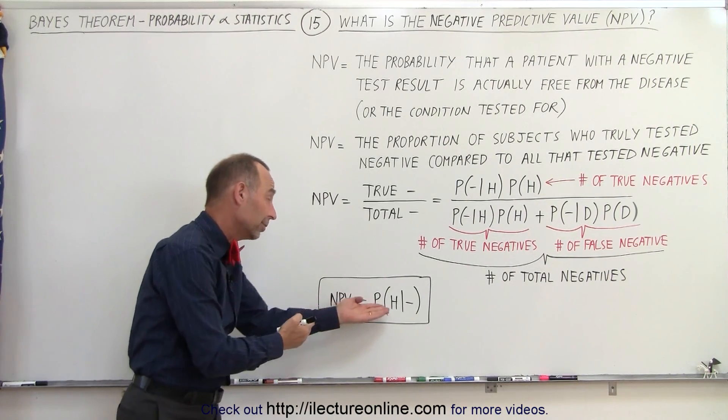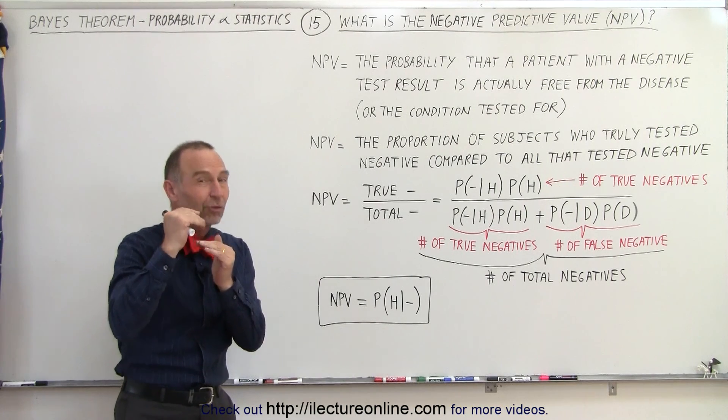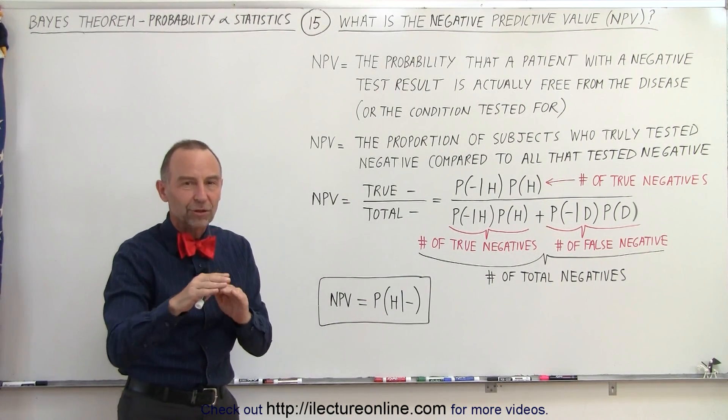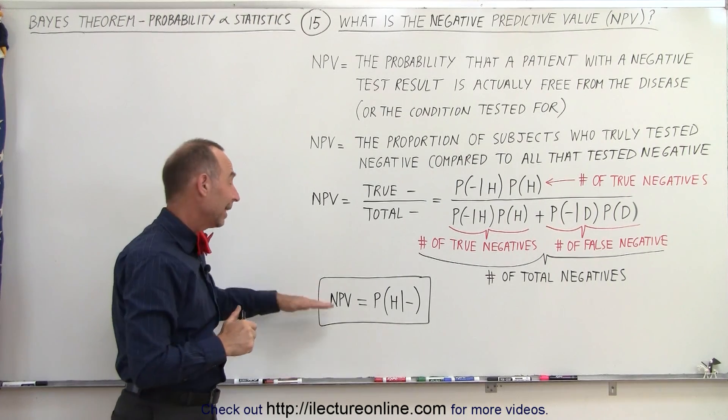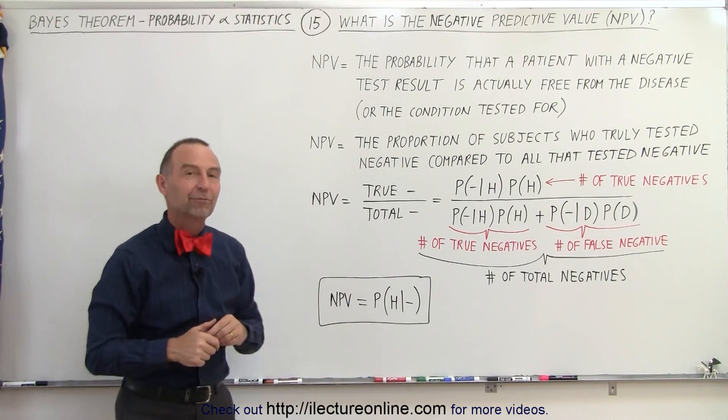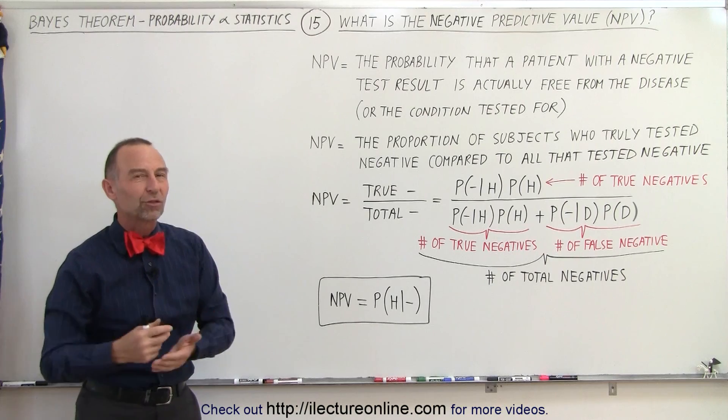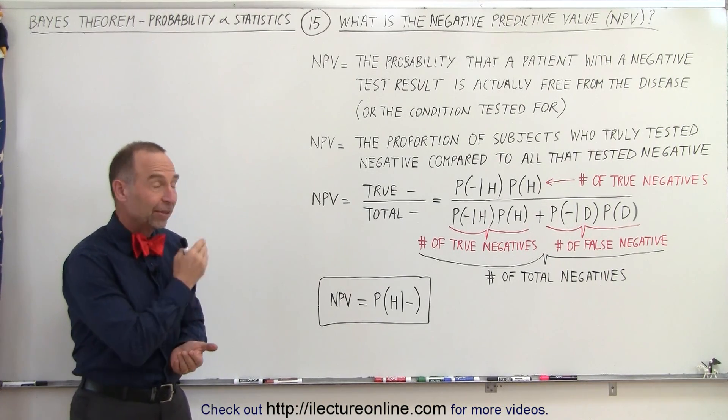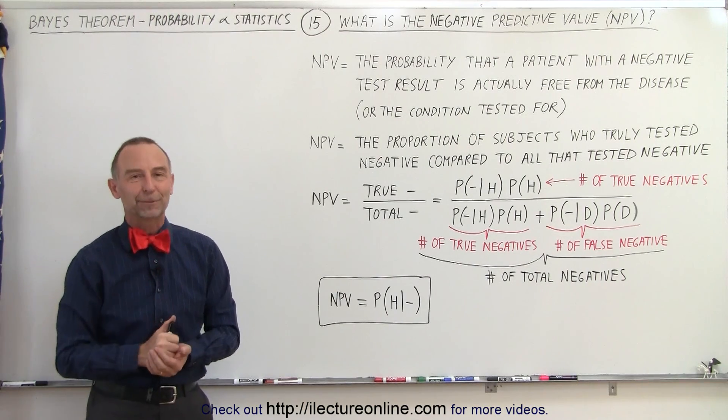You want this number, this probability, to be as close as possible to 100%. If you're negative, we're almost certain that you don't have the condition. And that's the important aspect of the negative predictive value. We'll show you some numerical examples of that so you can see how that actually works. But that's the definition of the negative predictive value.